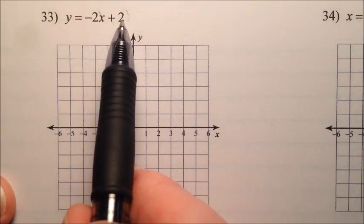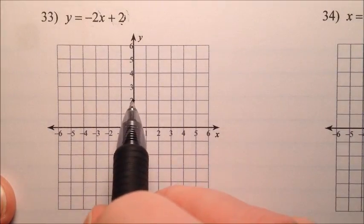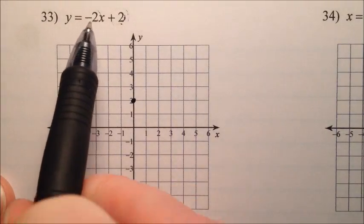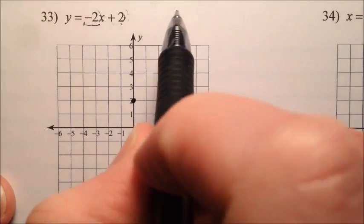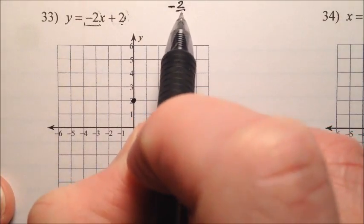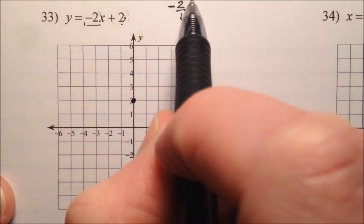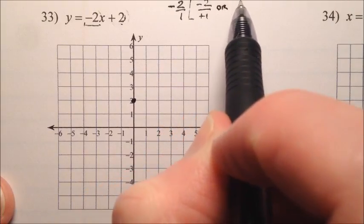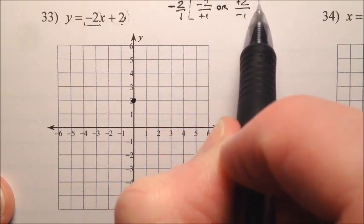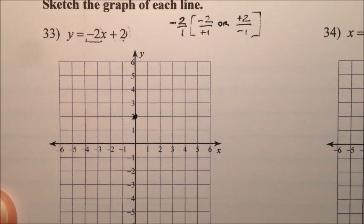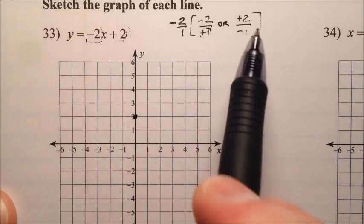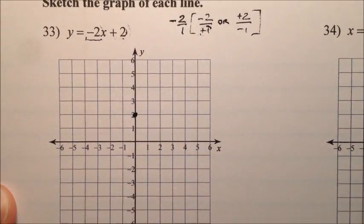Our y-intercept here is this positive 2, so I'm going to go up here, plus 2, draw a line. And I know my slope is negative 2, which I could say is negative 2 over 1, which would be a negative 2 over a positive 1, or a positive 2 over a negative 1. The reason I like to have both of these is because one will propagate points to the right, and one will propagate points to the left.